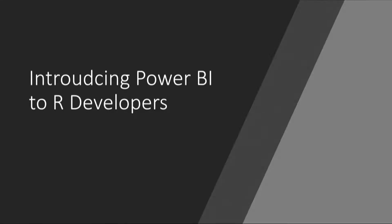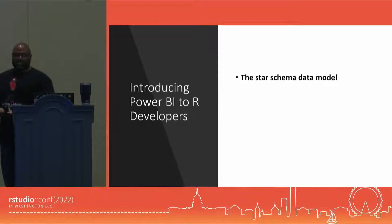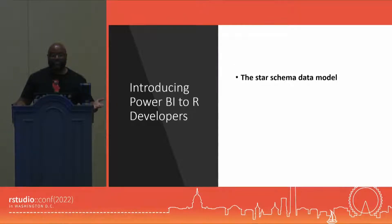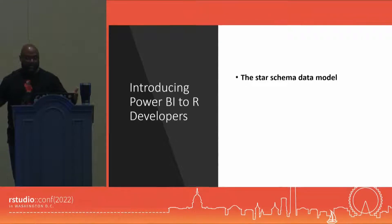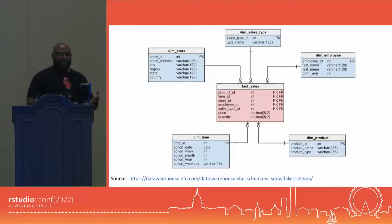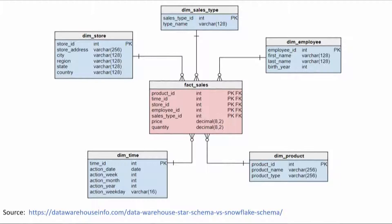Let me introduce Power BI to some of you that are new to it from a high level. Power BI is a data visualization tool, so in order to do data visualization, you need data. The data model that Power BI prefers is known as the star schema data model. The star schema data model is made up of two types of tables: a dimension table and a fact table. The fact table is in the center and it stores measures.